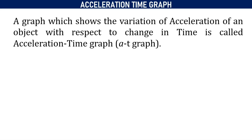First, when we consider the meaning of acceleration-time graph or AT graph, it is a graph which shows the variation of acceleration of an object with respect to change in time. Acceleration is plotted on the y-axis and time on the x-axis — this graph is called the AT graph.